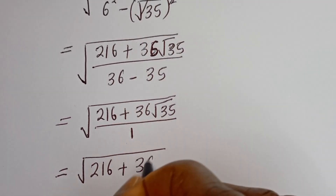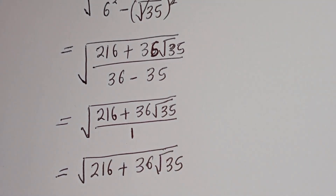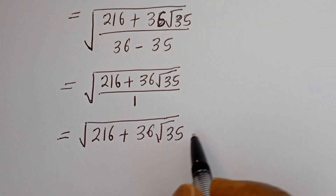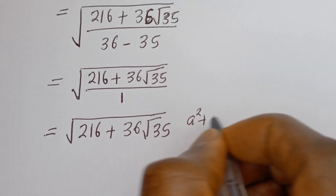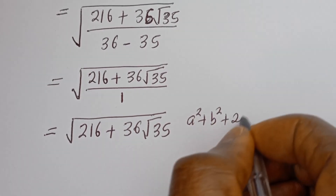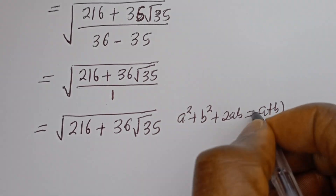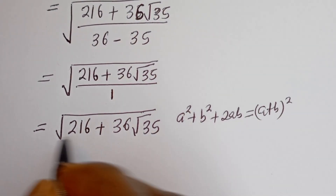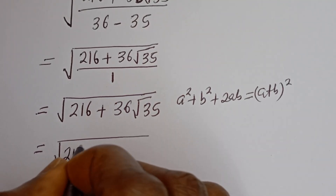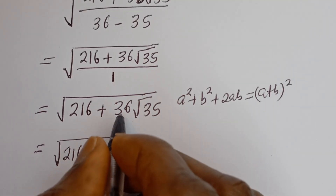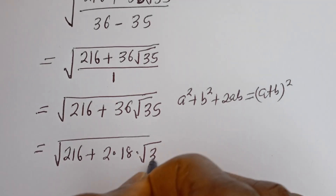Now we want to express 216 plus 36 root 35 in the form A squared plus B squared plus 2AB, which equals A plus B squared. We can rewrite 36 as 2 multiplied by 18, so this becomes 216 plus 2 multiplied by 18 multiplied by root 35.